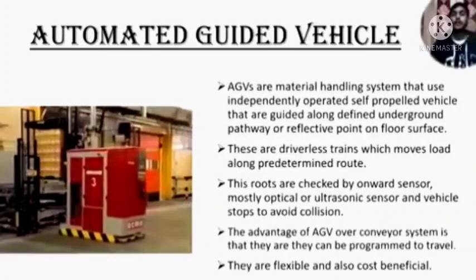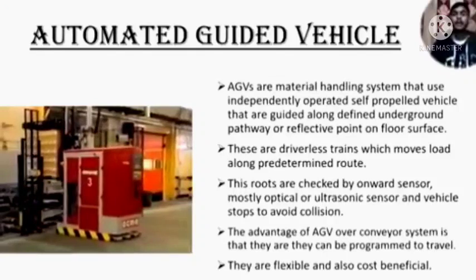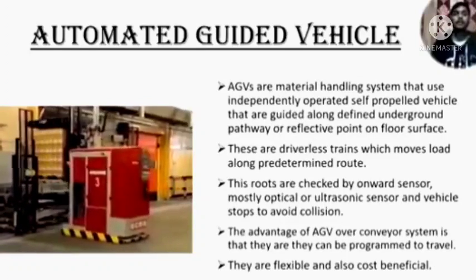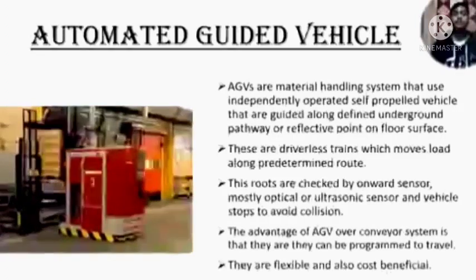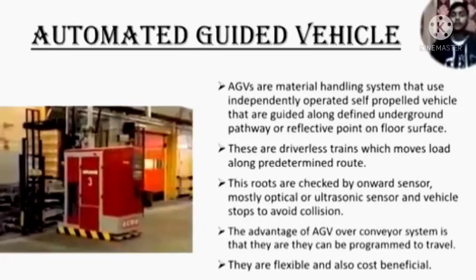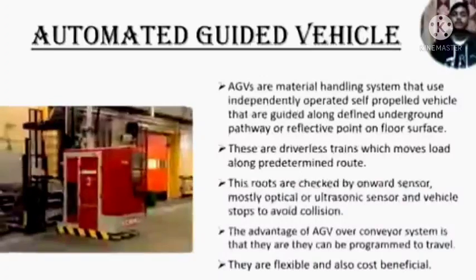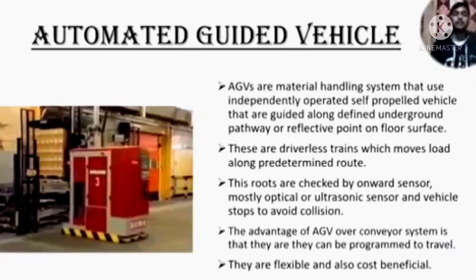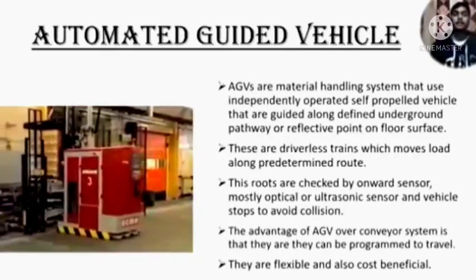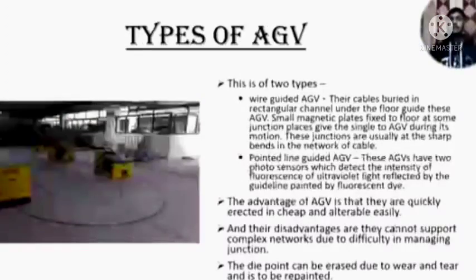Now we will see automated guided vehicles, that is AGV. AGVs are material handling systems that use independently operated self-propelled vehicles that are guided along different underground pathways or reflective points on the floor surface. These are driverless vehicles which move loads along a predetermined route. These routes are checked by onboard sensors, mostly optical or ultrasonic sensors, and the vehicle stops to avoid collision. The advantage of AGV over conveyor systems is that they can be programmed to travel different routes; they are flexible and also cost-beneficial. AGV is of two types: wire guided AGV and paint line guided AGV.